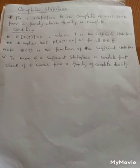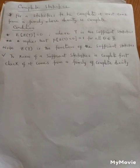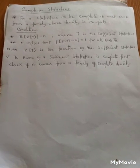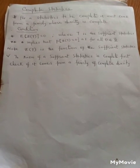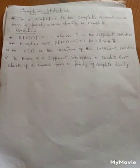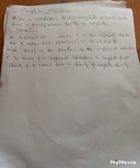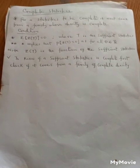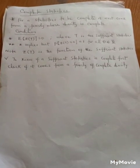We want to check if a statistic is complete — specifically, if a sufficient statistic is complete. To be able to do this, we must first check whether that sufficient statistic comes from a family whose density is complete. There are various steps we can use to do that.